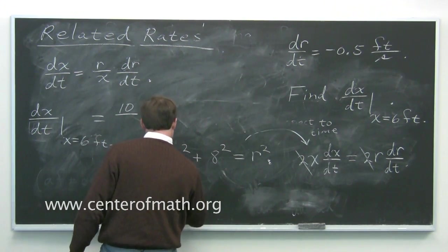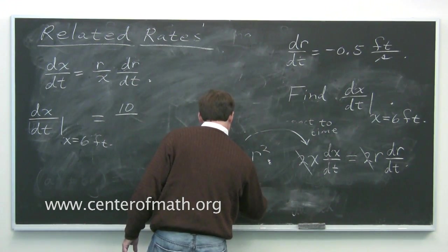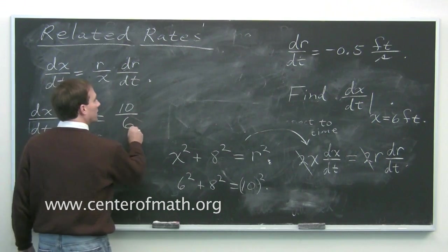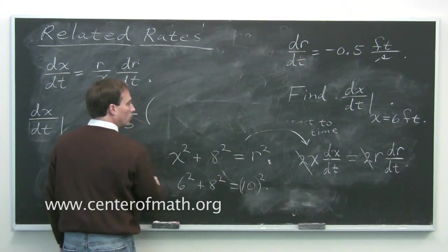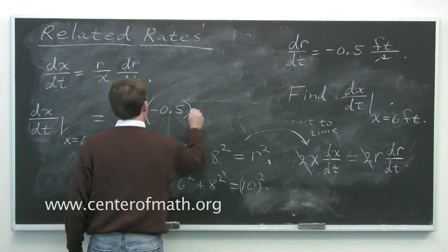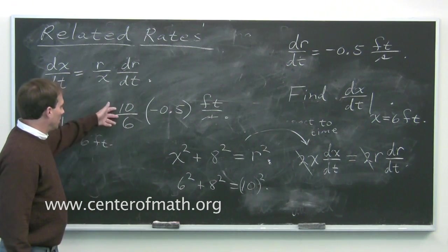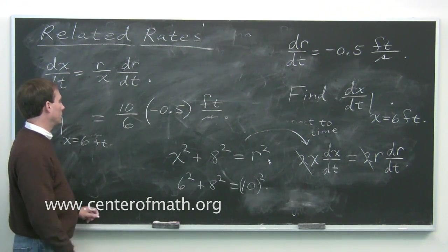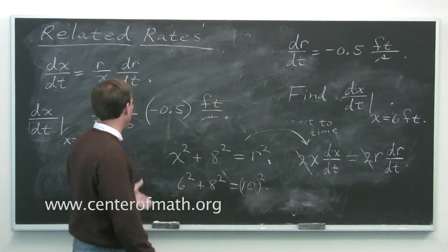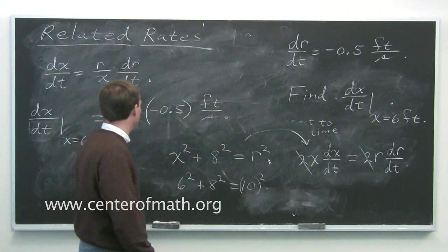So to put in that when x is 6, you get r needs to be 10. So you get 10 divided by 6 times dr/dt, which is, we're given, is negative 0.5. And this comes out in feet per second. You can simplify this. This is 5 thirds. And then you multiply times a half, so 5, 6, negative 5, 6. But this is what you get. And that's how related rates problems go.